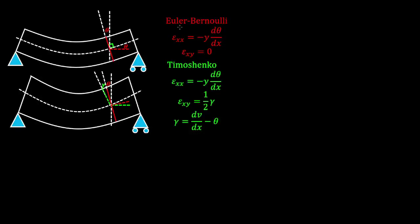We derived the following strains for the Euler-Bernoulli beam and the Timoshenko beam. In the Euler-Bernoulli beam, only the bending strain causes rotation of the neutral axis, and the cross section remains perpendicular to the neutral axis before and after deformation. For the Timoshenko beam, bending rotates the neutral axis and the cross section, while shear further rotates the neutral axis without rotating the cross section — so plane sections remain plane but not perpendicular to the neutral axis after deformation.